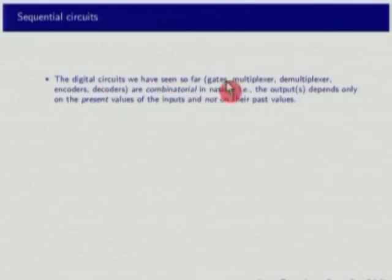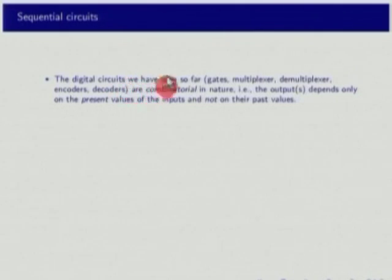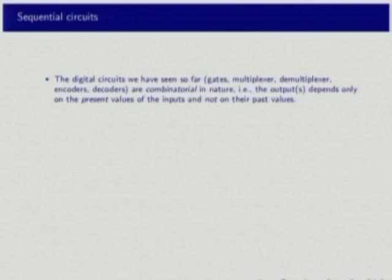The digital circuits we have seen so far - gates, multiplexers, demultiplexers, encoders, decoders - they are all combinatorial in nature. That means the outputs depend only on the present values of the inputs and not on their past values. These circuits do not have a history or memory embedded in them, and that is why they are called combinatorial circuits. It depends only on what combination of inputs you apply, not the sequence.